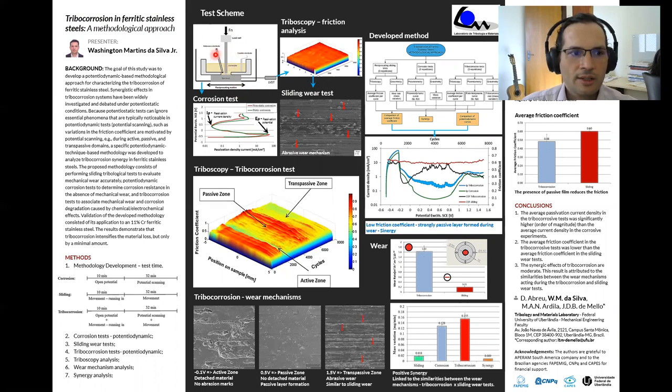Basically, it consists of a corrosion cell mounted on a reciprocating sliding wear test. This setup is well described in literature for measurement of the potential dynamic curve during the sliding wear test.